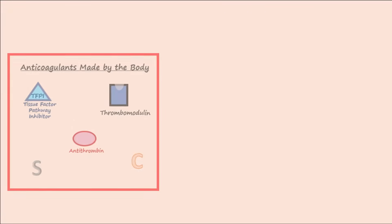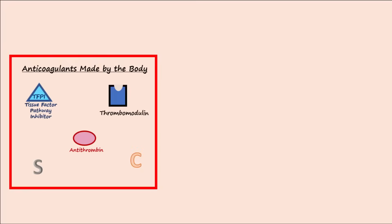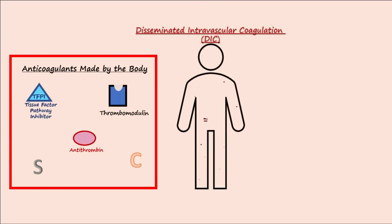The body makes anticoagulants to keep the coagulation cascade in check. Disseminated intravascular coagulation, or DIC, is a condition of widespread coagulation throughout the vasculature of the body that can be life-threatening. DIC is more likely to occur in individuals with low levels of naturally occurring anticoagulants.